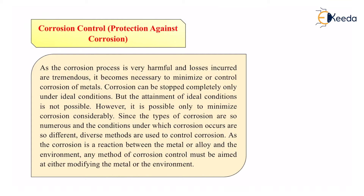The maximum we can do is try to minimize corrosion as much as possible. Since corrosion is a reaction between a metal or alloy and the environment, any method of corrosion control must be aimed at either modifying the metal or the environment. This reaction can occur chemically, biochemically, or electrochemically with gases like oxygen and carbon dioxide present in the environment, and can be controlled by addressing either the environment or the metal itself.